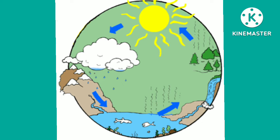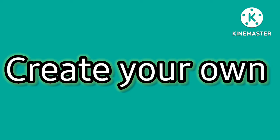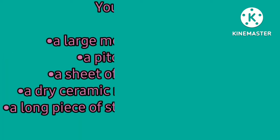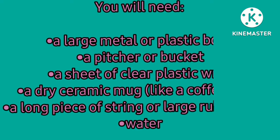The water vapor rises, and when it reaches cooler air, it condenses to form clouds. When the clouds are full of water — when they are saturated — they release some of the water as rain.